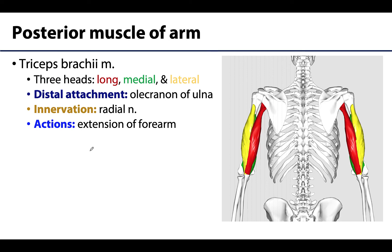Moving to the posterior arm — the posterior compartment — we have one major muscle to discuss. When thinking about the posterior compartment, think extension. This holds true for both the arm and the forearm: anterior compartments are flexors, posterior compartments are extensors. What differs between them is which joint their tendons are flexing or extending.